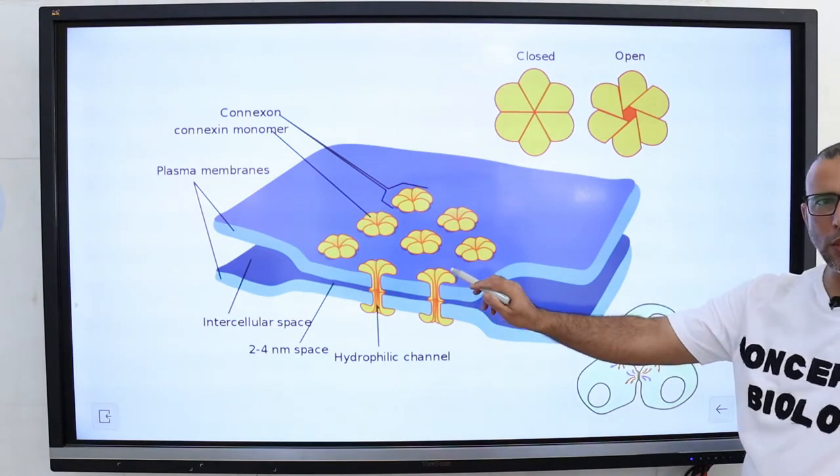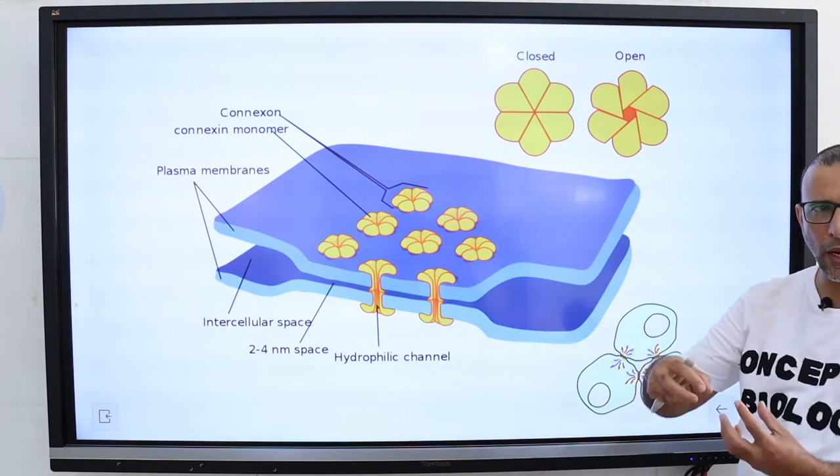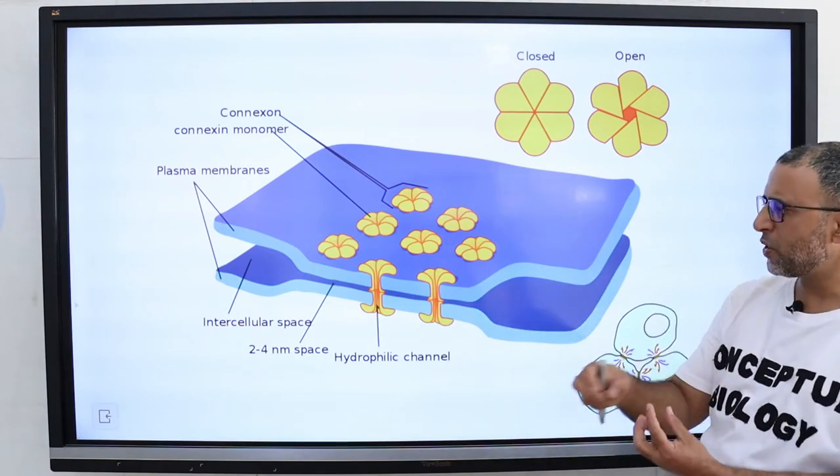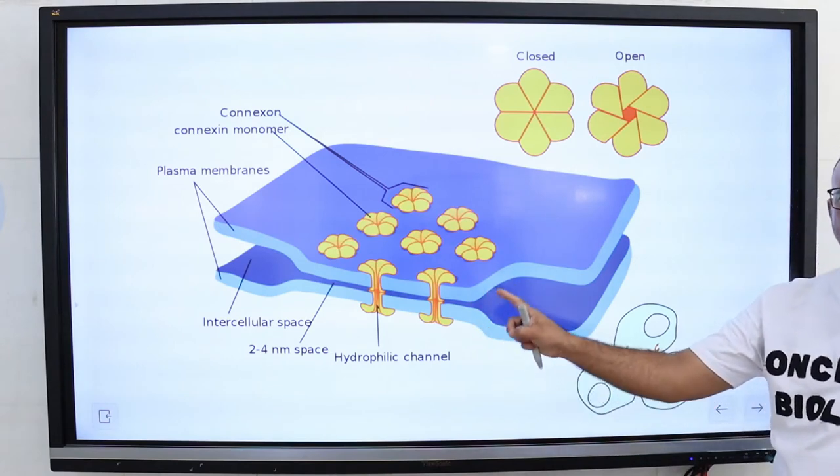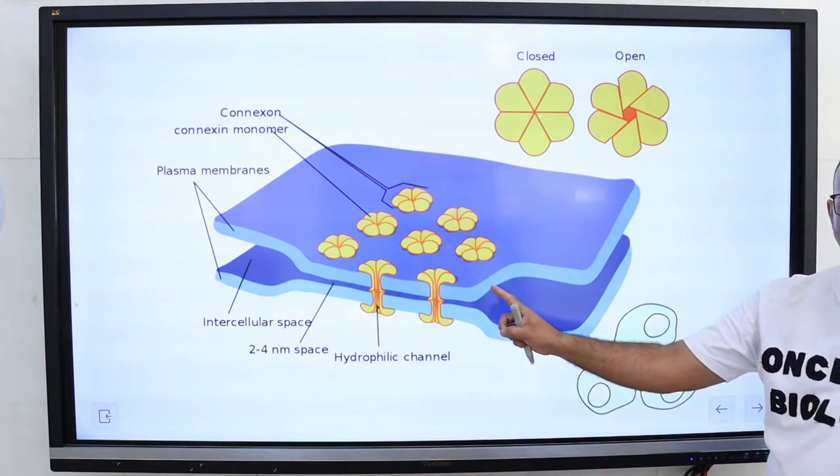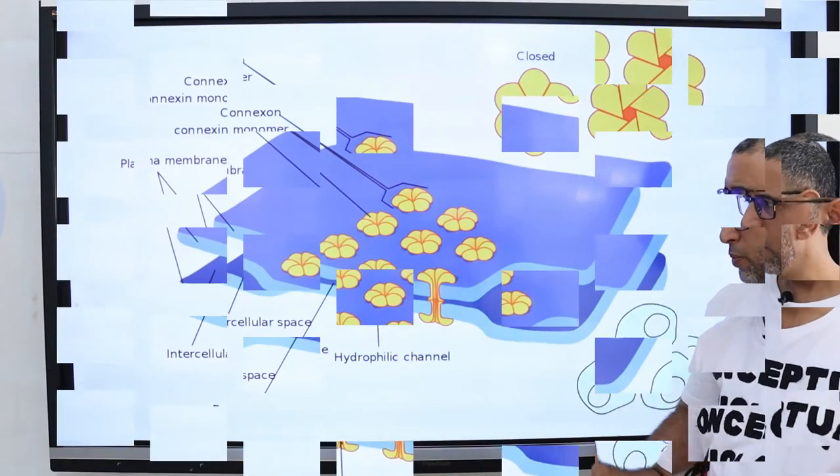A gap junction forms when the connexins or pannexins of two cells align perfectly, creating an open channel that spans the plasma membranes of both cells. The two cylinders form a channel of about 1.5 nanometers in diameter.